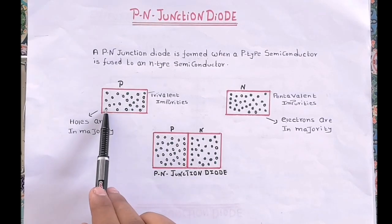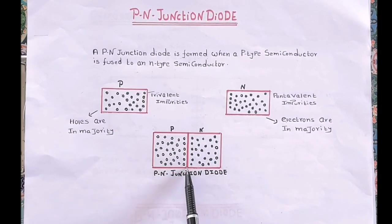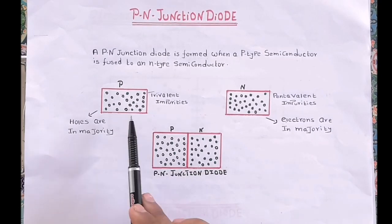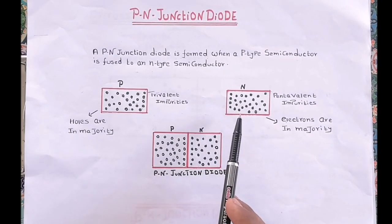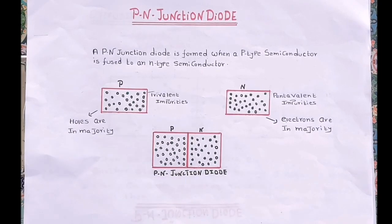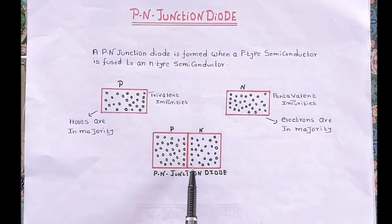This region where p-type and n-type semiconductors are joined is called a junction. In simple words, the region where p-type and n-type semiconductors are joined is called a p-n junction. Now let's see what happens when a p-type semiconductor and n-type semiconductor are joined.